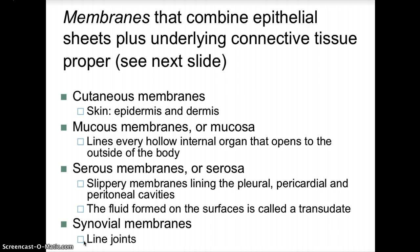Membranes combine epithelial sheets plus underlying connective tissue proper — that's what we refer to as certain types of membranes. We have cutaneous membranes, which refers to the skin; you have both the epidermis — 'epi' means above — and then the underlying dermis. Then you have mucous membranes, or mucosa, which line every hollow internal organ that opens to the outside of the body.